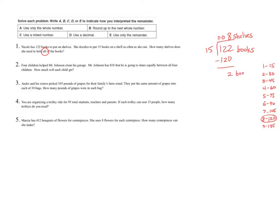So I have 2 books left over. The question says how many shelves will it take to hold all of my books? I need to ask myself: will 8 shelves be enough? If I want to put these 2 books on a shelf, I need 8 shelves plus 1 more shelf for those last 2 books. So instead of 8 remainder 2 fifteenths shelves, I rounded this up to 9. My answer is 9 shelves, and I used Strategy B.